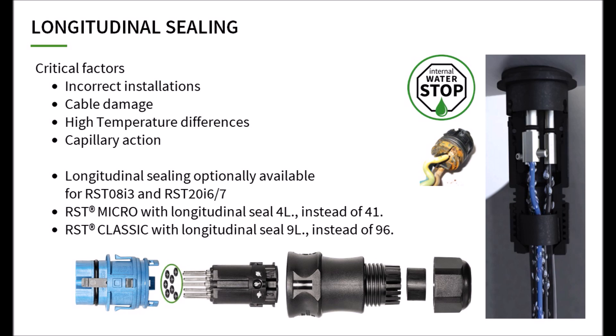In order to prevent the transmission of moisture through the cable system or the penetration of moisture into devices, RST connectors can optionally be supplied with contact seals to achieve longitudinal sealing. Components with longitudinal seals are identified by an L in the second digit of the article number. Longitudinal seals may only be used on one side of the plug connection, in male or in female connector.